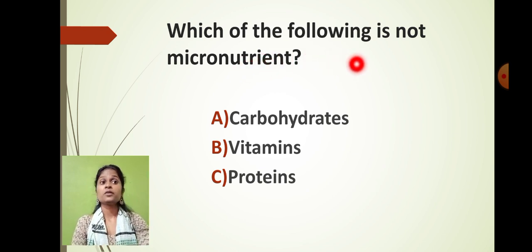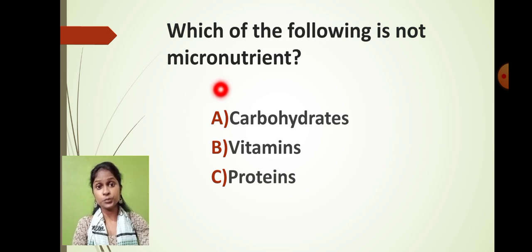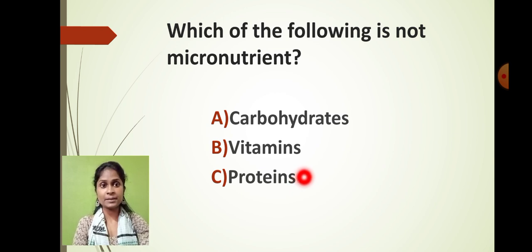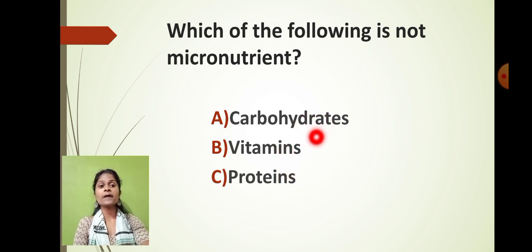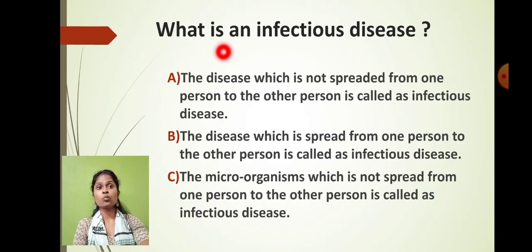For example, if the question is 'Which of the following is not a micronutrient?' the three options would be: A) Carbohydrate, B) Vitamin, C) Protein. Carbohydrate and protein are macronutrients, while vitamin is a micronutrient. So you have to click on option B — Vitamin — as the correct answer. This is the type of MCQ format used for filling in the blanks and name-the-following questions.